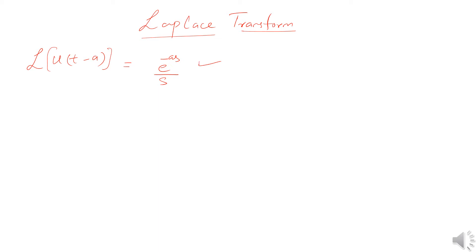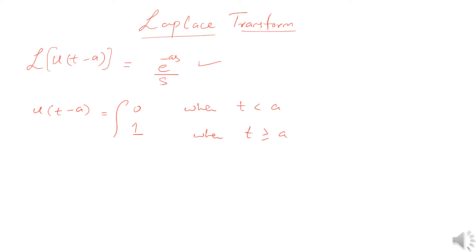Let's take the unit step function u(t − a), which is defined as: zero when t is less than a, and one when t is greater than or equal to a. Now we will take the Laplace transform of this function.